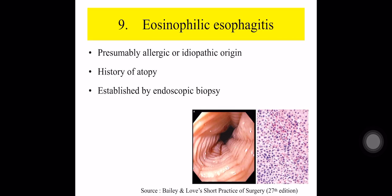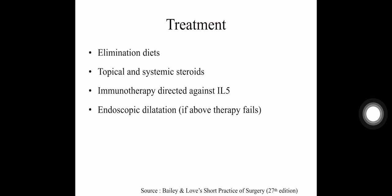The next one is eosinophilic esophagitis. The cause may be allergic or idiopathic origin, and it occurs in association with atopic diseases like allergic rhinitis, asthma, and food urticaria. Diagnosis is established by endoscopic biopsy, where you can see eosinophilic infiltration on histology. Treatment is by elimination diets, topical and systemic steroids, and immunotherapy directed against interleukin-5. Endoscopic dilatation can also be done if the above therapy fails.